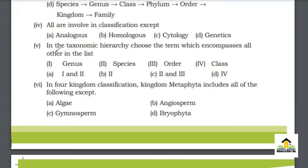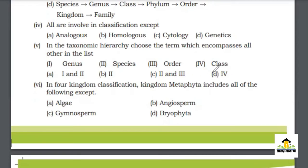MCQ number 5: In the taxonomic hierarchy, choose the term which encompasses all others in the list. 1. Genus, 2. Species, 3. Order, 4. Class. Option A: 1 and 2, Option B: 2, Option C: 2 and 3, Option D: 4. The right answer is D, which is Class.